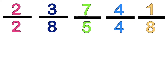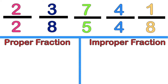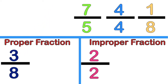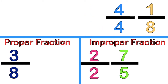I have this set of fractions. I want you to help me organize the fractions according to their type. Let's start with 2 halves — is it proper or improper? That's correct, it is improper, since 2 halves is equal to 1, so it is an improper fraction. How about 3 eighths? It is a proper fraction, because the numerator is smaller than the denominator. How about 7 fifths? Fantastic! It's improper, because it is more than 1 and the numerator is bigger than the denominator.